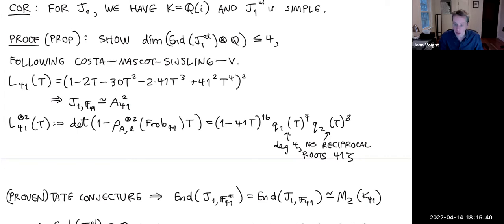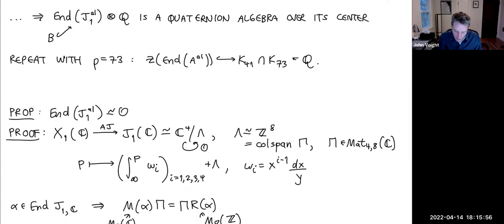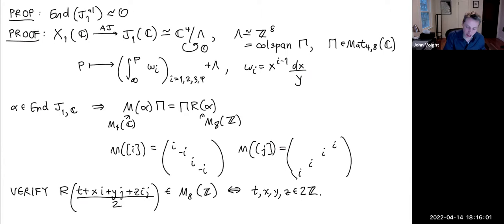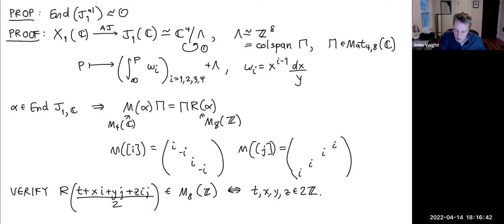This is an effectively computable way to get upper bounds on dimensions of endomorphism algebras — and we're lucky to have already produced the endomorphisms showing the bound is tight. The next step: prove the geometric endomorphism ring is exactly the Lipschitz order O. We need to check the Hurwitz element (1 + i + j + ij)/2 is not an endomorphism. We work complex-analytically: write down the Abel–Jacobi map, viewing J_1 as C⁴ modulo a lattice Λ.